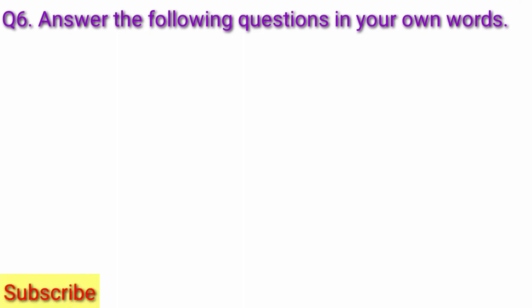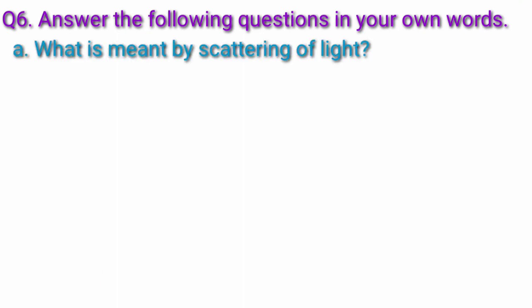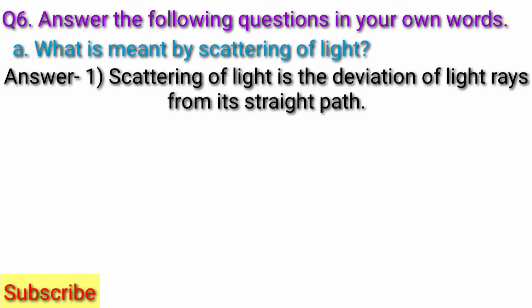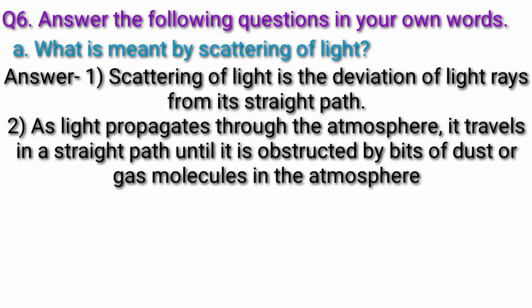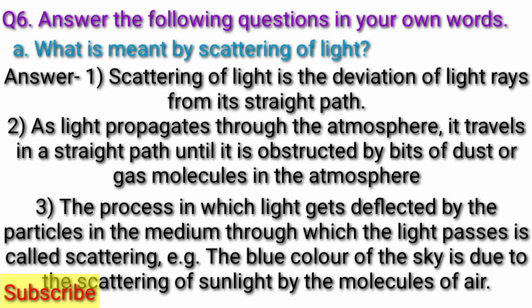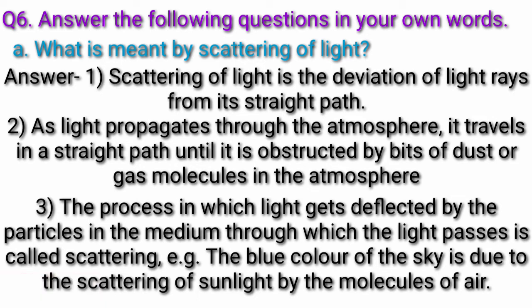Question 6. Answer the following questions in your own words. Question A: What is meant by scattering of light? Answer: Scattering of light is the deviation of light rays from its straight path. As light propagates through the atmosphere, it travels in a straight path until it is obstructed by bits of dust or gas molecules in the atmosphere. The process in which light gets reflected by the particles in the medium through which light passes is called scattering. Example: the blue color of the sky is due to the scattering of sunlight by the molecules of air.